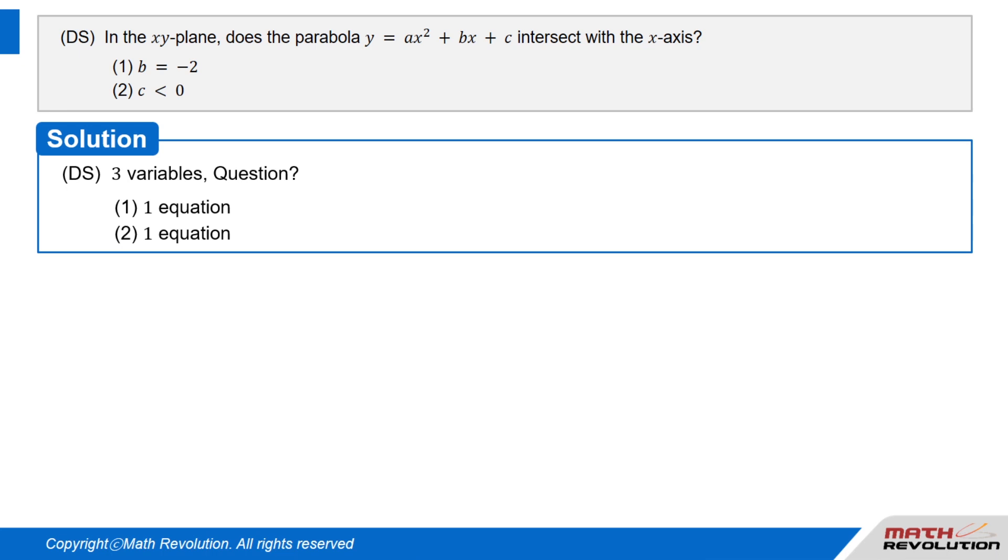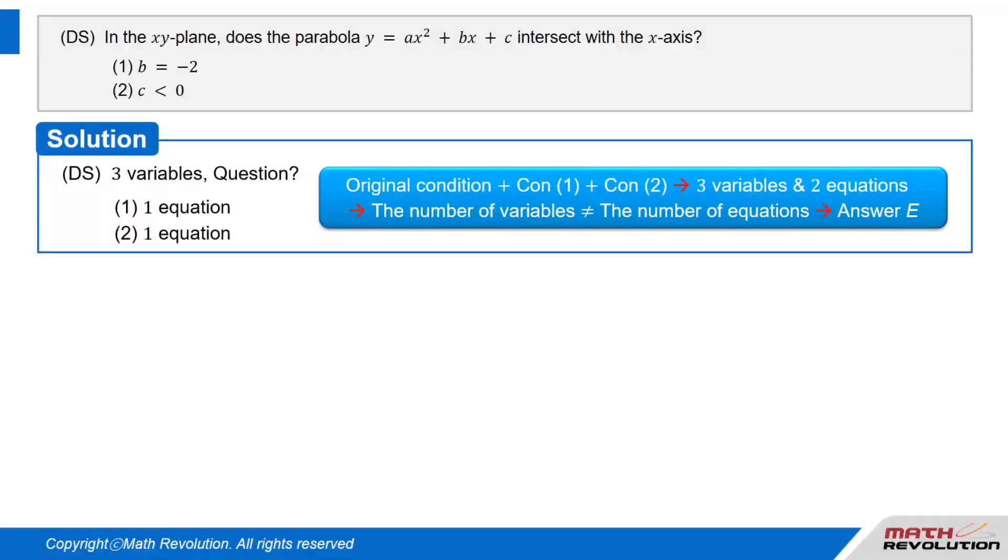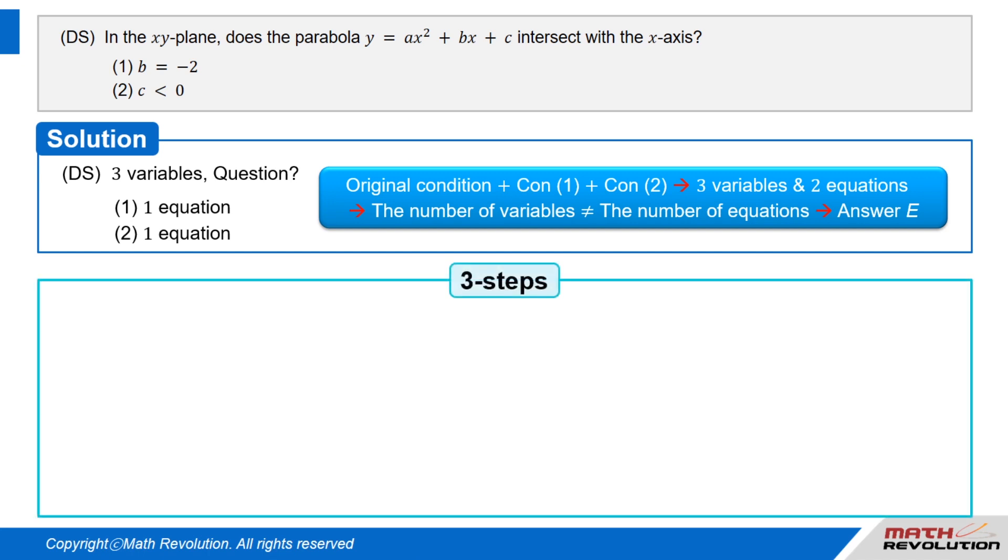DS question with three variables. Let the original condition in a DS question contain three variables. Now three variables would generally require three equations to allow us to solve for the variables. We know that each condition would usually give us an equation resulting in a total of two equations, one each from condition 1 and condition 2. However, since we need three equations to match the numbers of variables and equations in the original condition, the unequal number of variables should logically give us an answer e.